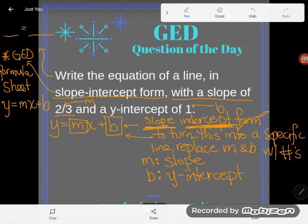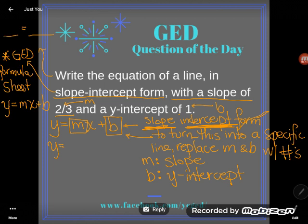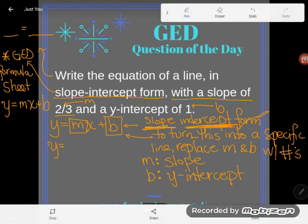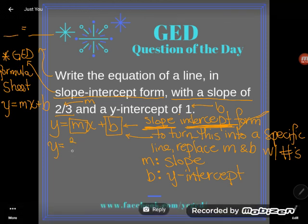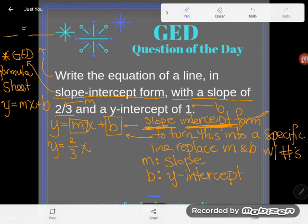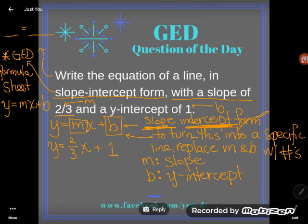So all you have to do in this problem is replace the M with the number they told you and replace the B with the number they told you. So here we go. We'll have Y equals, what is our M, our slope? Well, they said our slope was two-thirds. So I'll write two-thirds right there, shove it up against X. And now we have a y-intercept of positive one. So I'll just write plus one. And it seriously is that easy. I'm done.